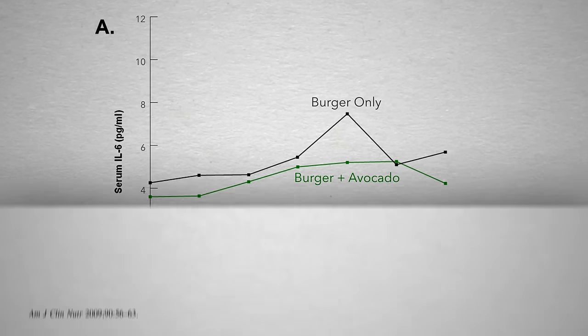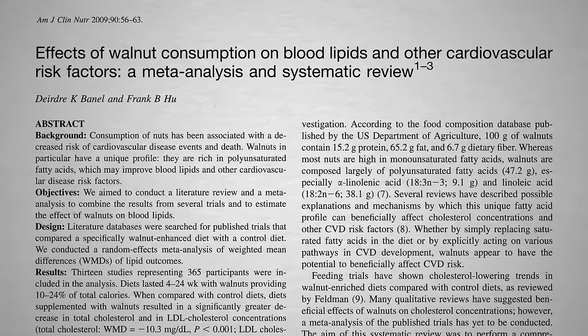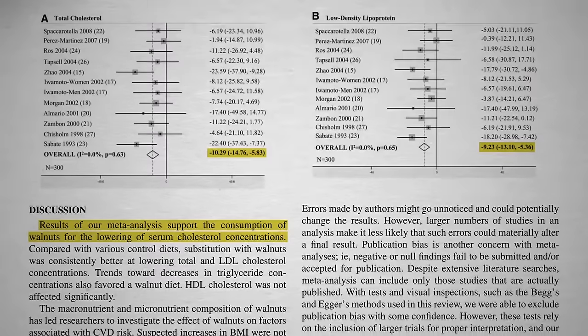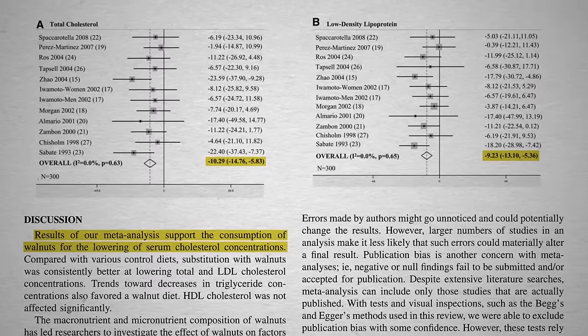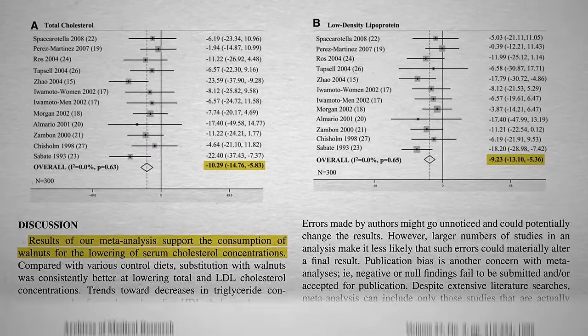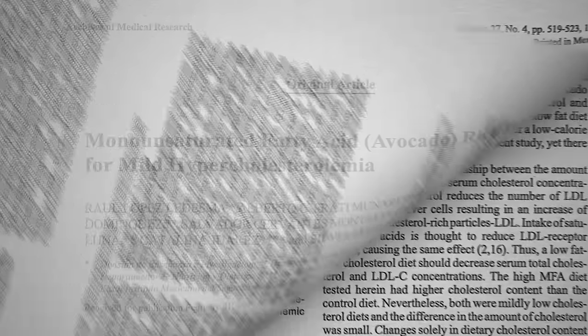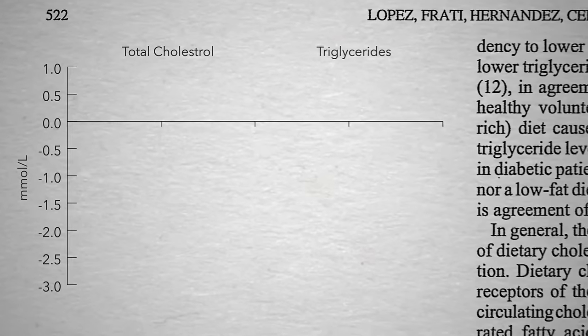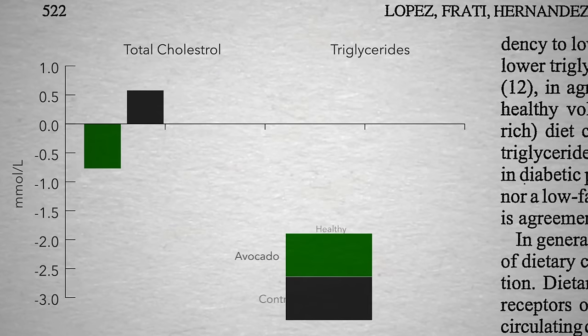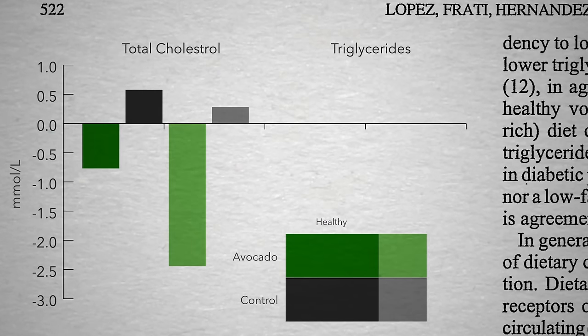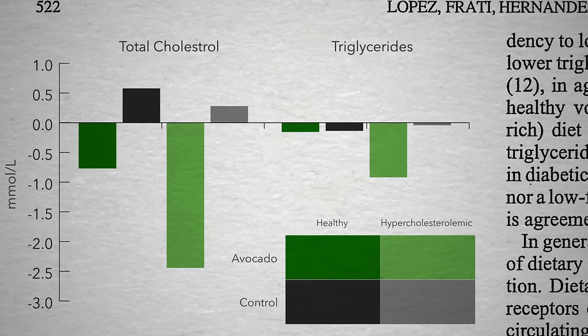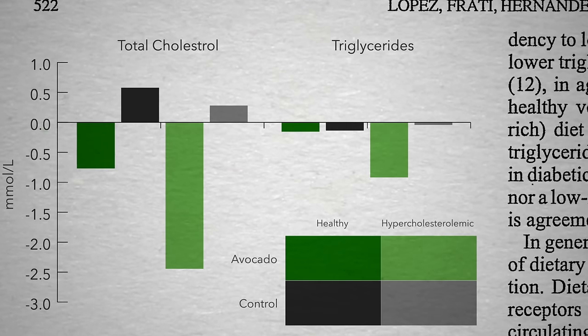This may be because all whole plant foods contain antioxidants, which decrease inflammation, as well as fiber, which is one of the reasons even high-fat whole plant foods like nuts can lower cholesterol. The same could be said for avocados—significant drop in cholesterol levels, especially in those with high cholesterol, with even a drop in triglycerides.